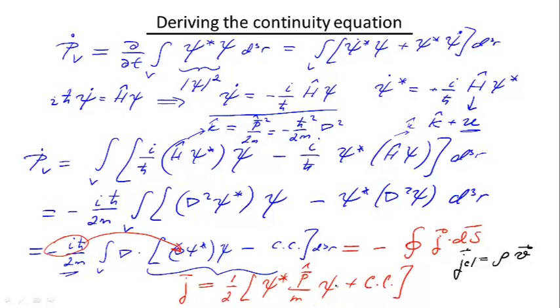So, and so this is the final result, which connects the change in the probability of finding a particle in the volume V with the flux of a certain probability current flowing through this surface.